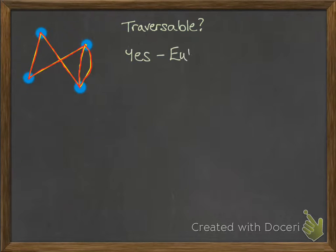This one started at a node that was different to where it finished at. That means that we've created an Euler path.